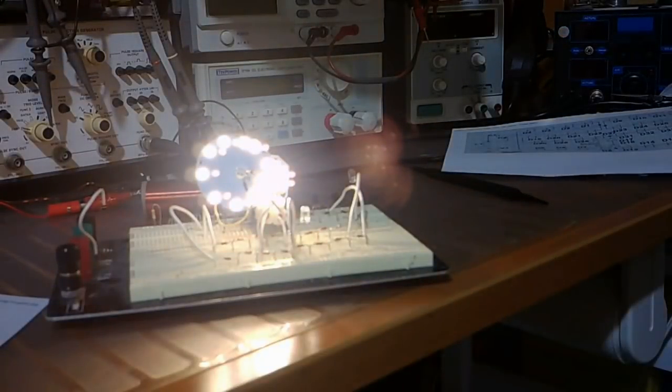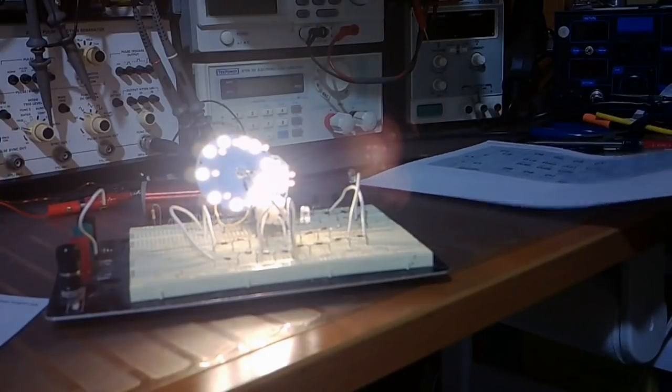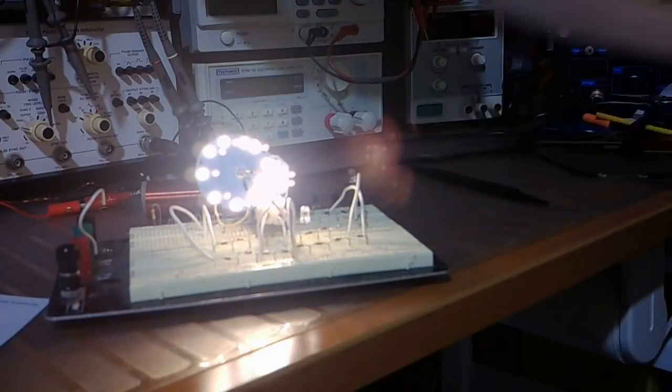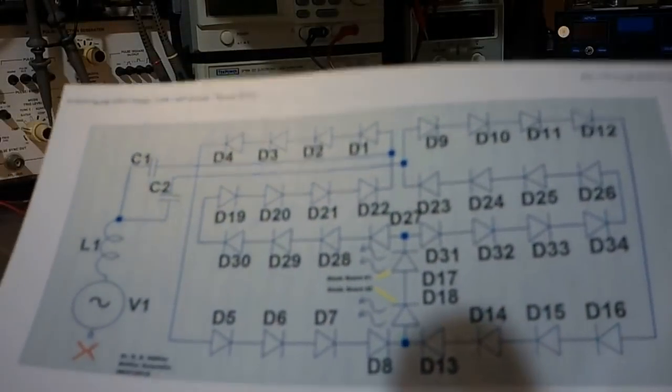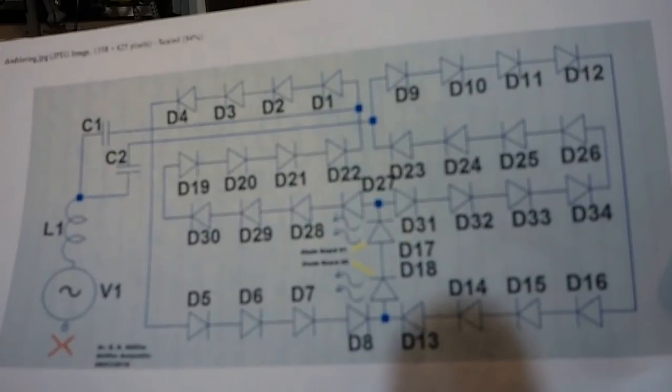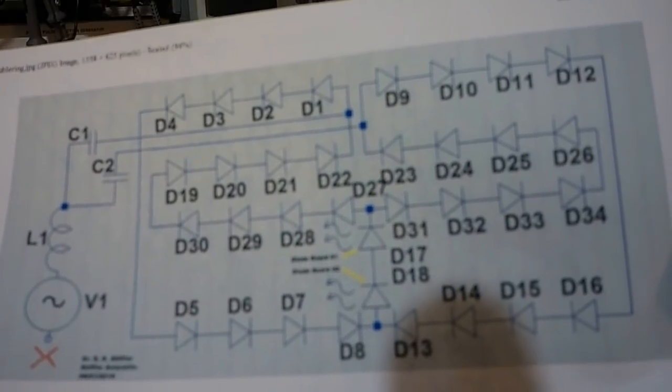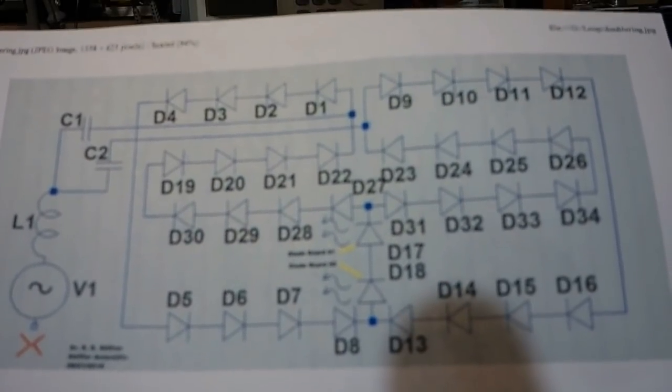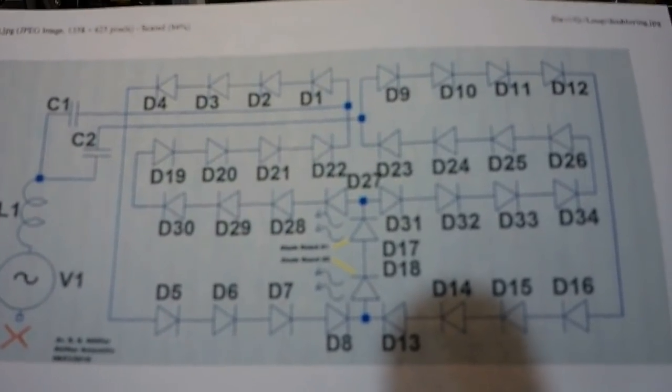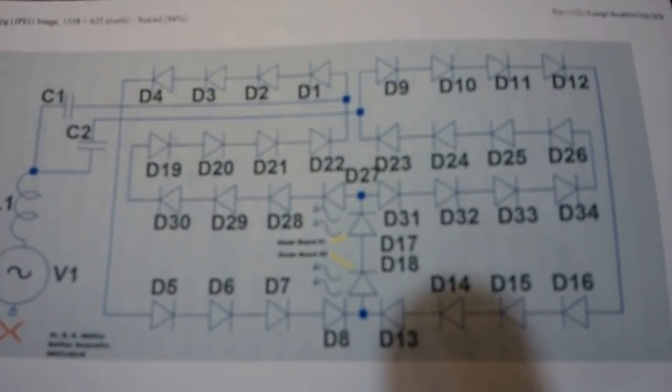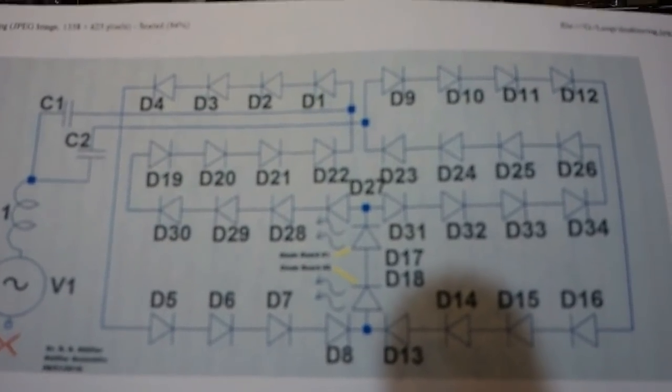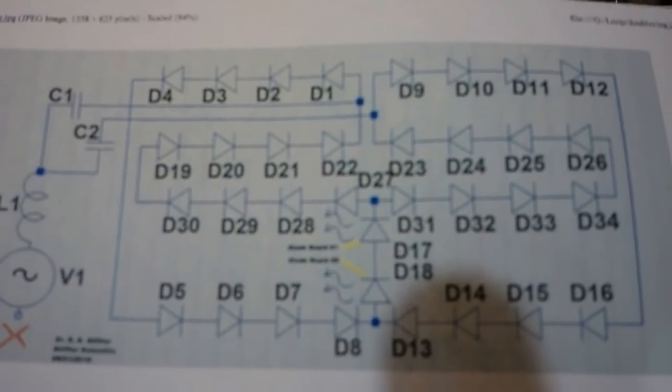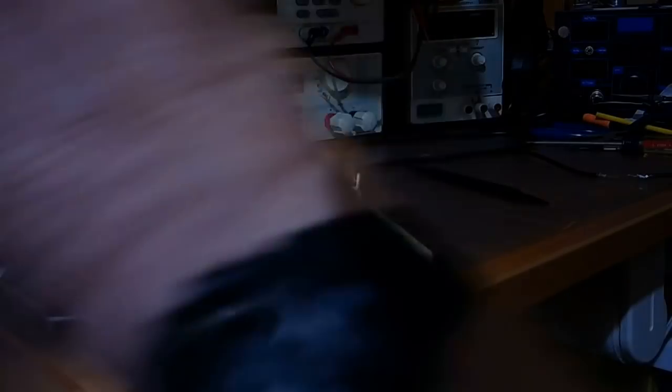And now what we have here, that's driving two Cree boards, is what I call a double loop. And here's the schematic for it. Now it shows D17 and D18, which are the two Cree boards. And then I don't have the little white LED showing on here, but it's there.